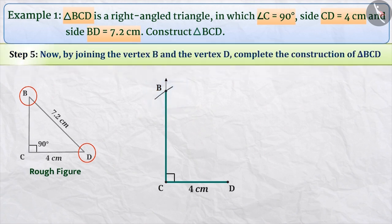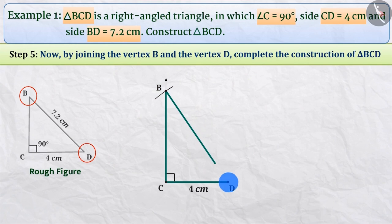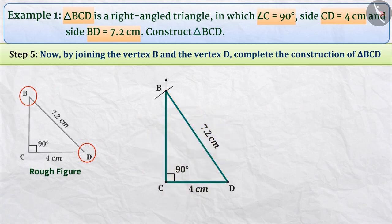Step 5: Now we will join vertex B and vertex D, from which we will get side BD of triangle BCD. In this way, we have constructed the right-angled triangle BCD.